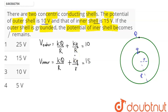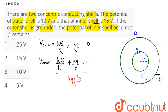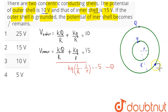We need to find the potential of the inner shell when the outer shell is grounded. Subtracting the two equations, K·q comes out common, giving us (1/r − 1/R) = 10 − 15 = −5. This is equation number 1. When the outer shell is grounded, its potential equals 0.